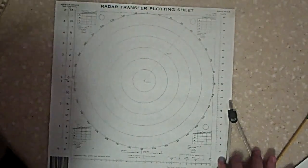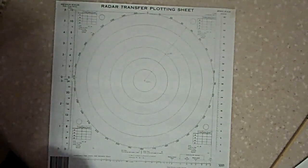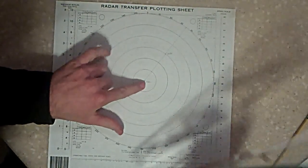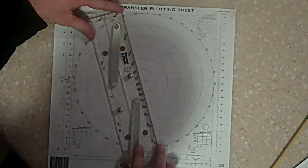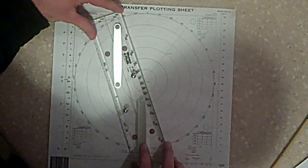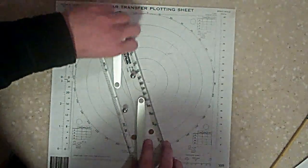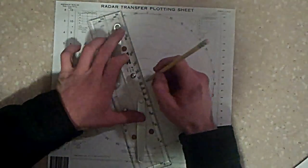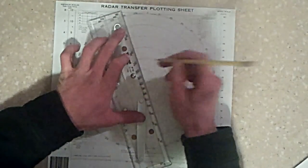Alright, now apply your set and drift. The current is 340 degrees true, so from your 0000 position, align your parallel rulers with 340, and your center. Draw your line.